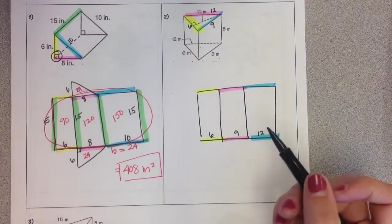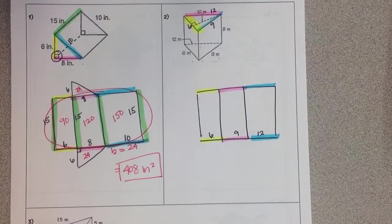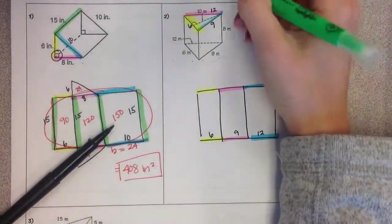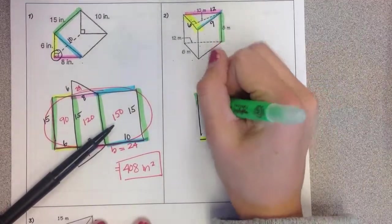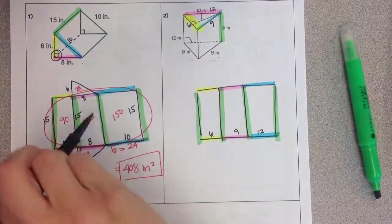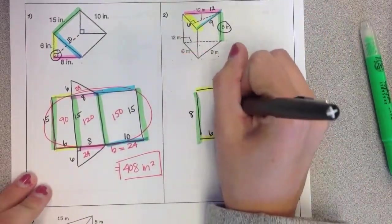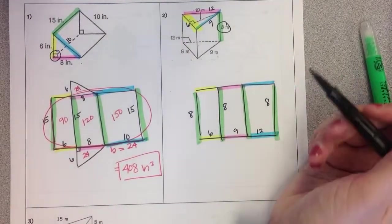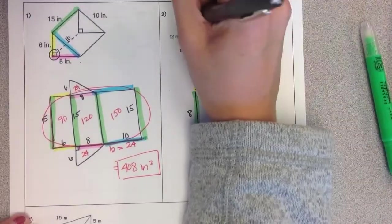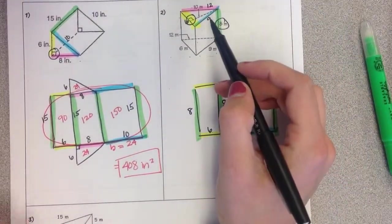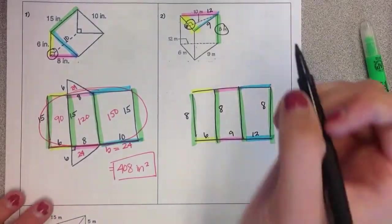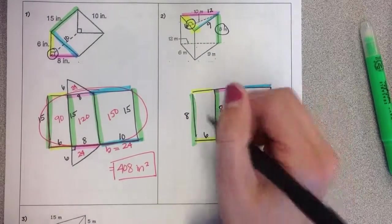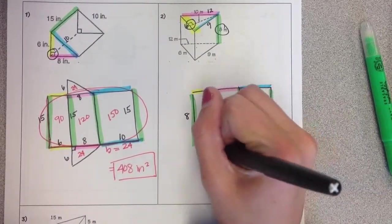The next thing that I'm going to do is I'm going to identify the height of the prism, so the measure that's connecting them, which is this measure here, which is 8. And then the last part is figuring out what our base and height of our triangular base is. So I'm looking for the 90 degree measure. This time we don't have a right triangle, so it's not two side lengths that are going to give us that. It's a side length with a perpendicular height. So the side length it's connected to is the 6, and it's showing a height of 10.